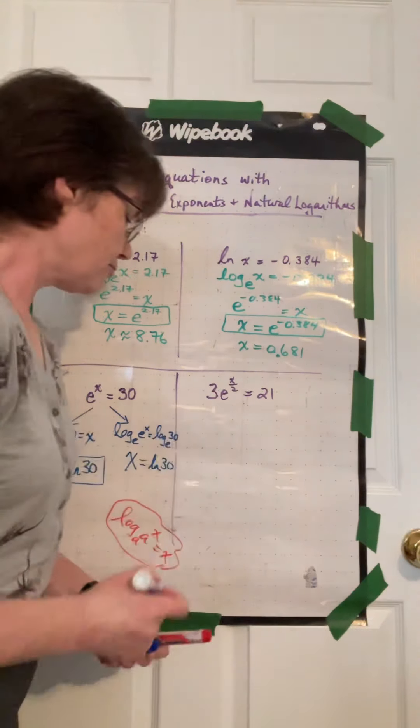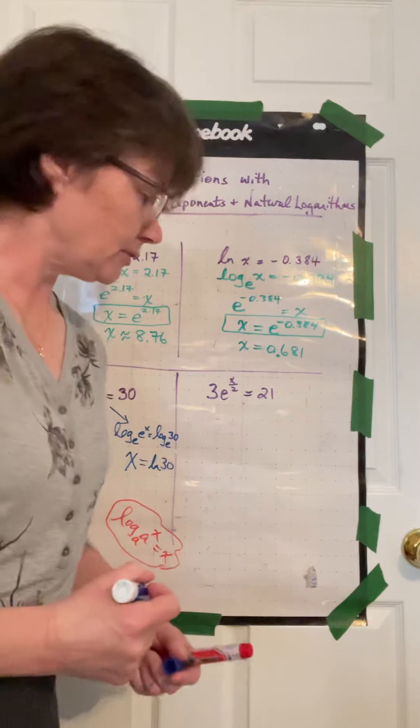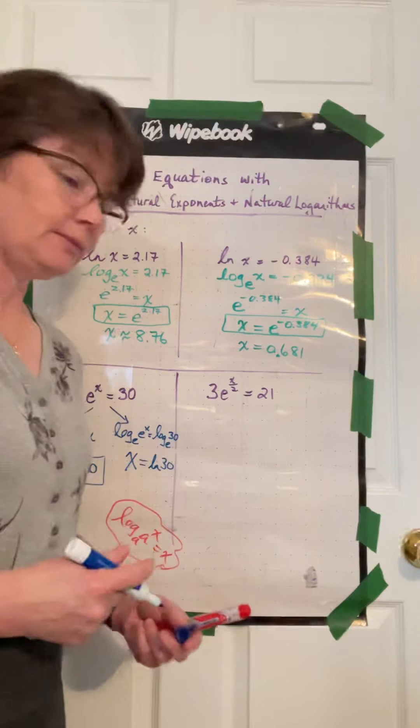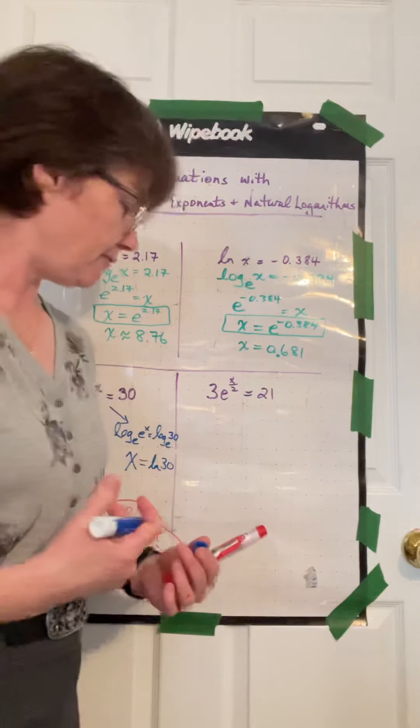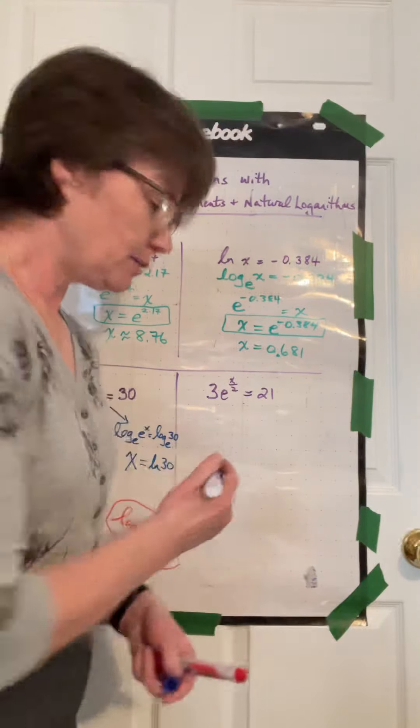Last example, 3e to the power of x over 2 equals 21. So normal algebra, we need to make this as simple as possible right off the bat. So divide both sides by 3.